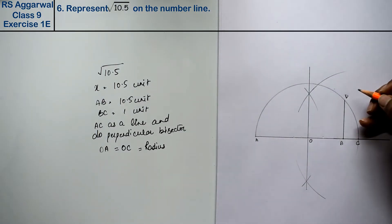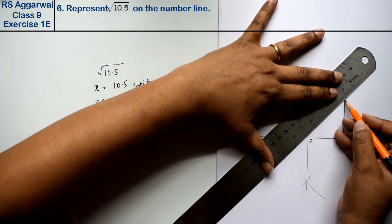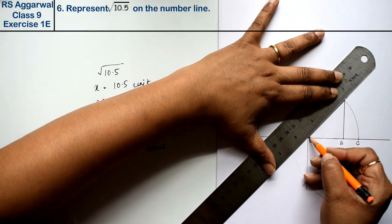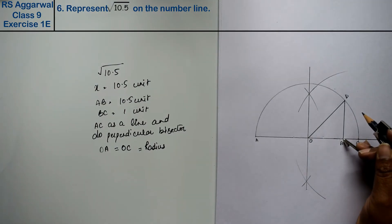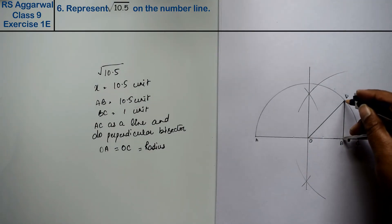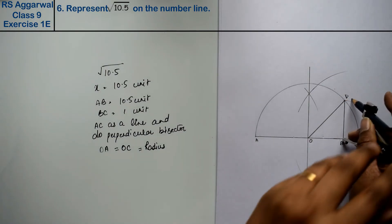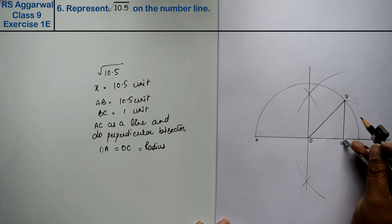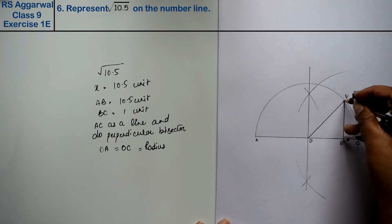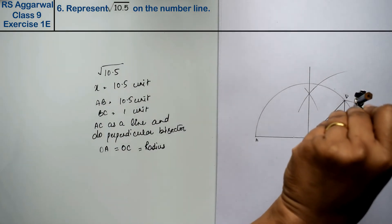And we will join OD also. Now OD is also a radius for this semicircle, but now we will take BD as a radius and make a semicircle. Now we will take BD as a point and make an arc.